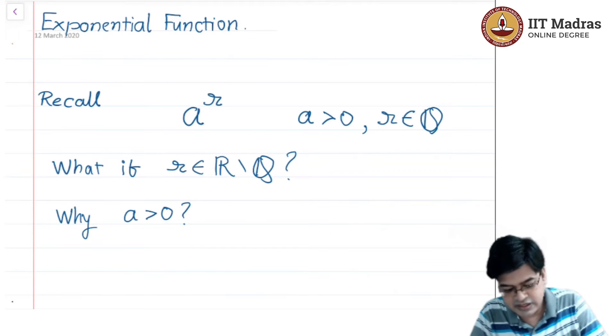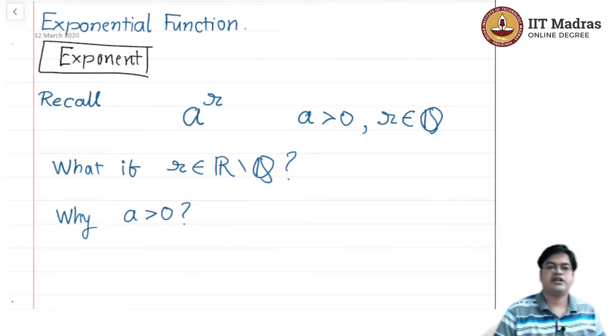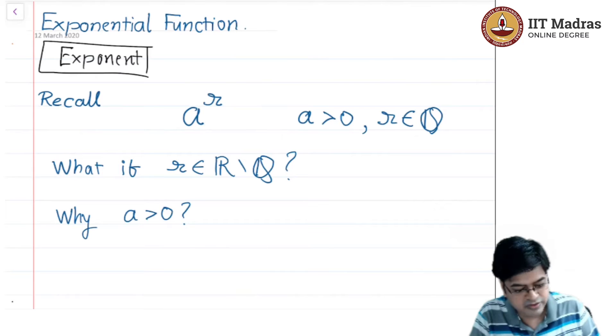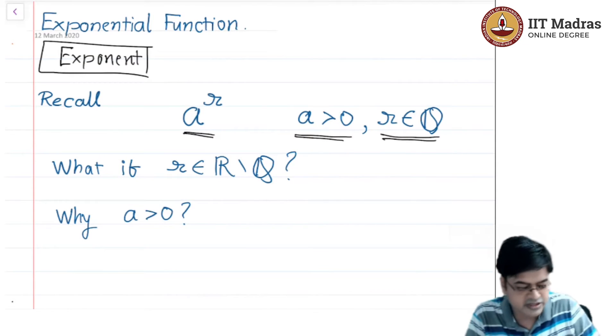In this topic, we will first identify some known terminology, that is exponent. We have already seen exponents where we allowed integer powers and then while defining exponents we allowed rationals also. When we defined exponents, they were of the form a raised to r, and we always assumed a is greater than 0 and r belongs to the set of rationals.